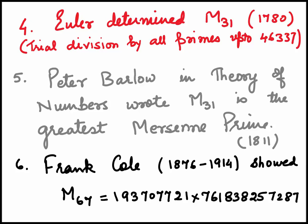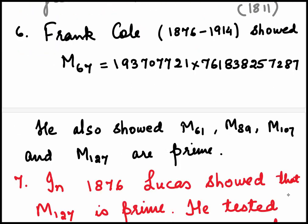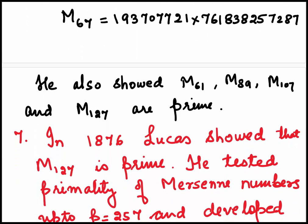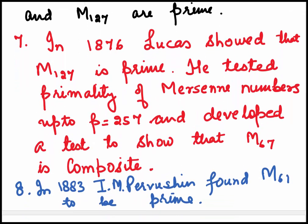In 1811, Peter Barlow in the theory of numbers wrote M31 is the greatest Mersenne prime. Frank Hall later on showed that M67 is composite. He gave the two factors as 193707721 and 761838257287. He also showed that M61, M89, M107, and M127 are prime.